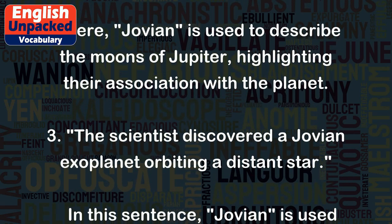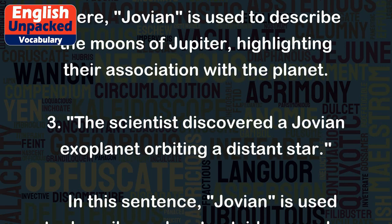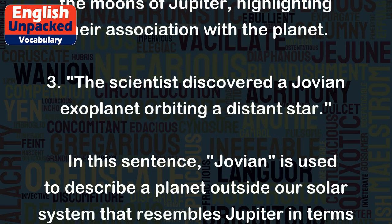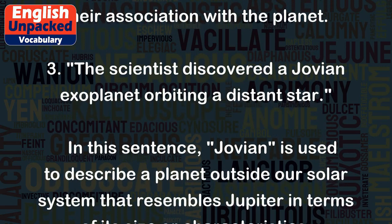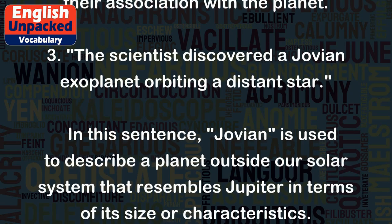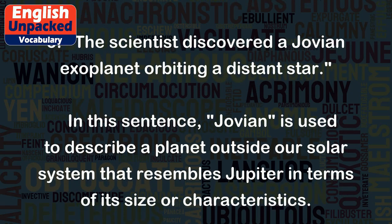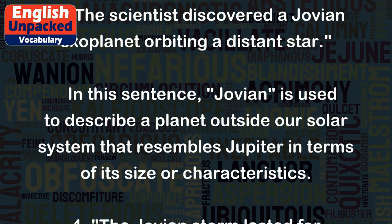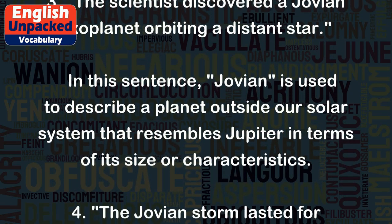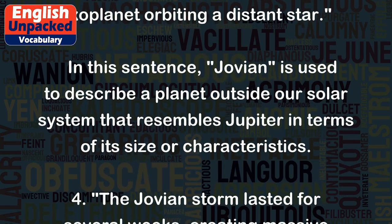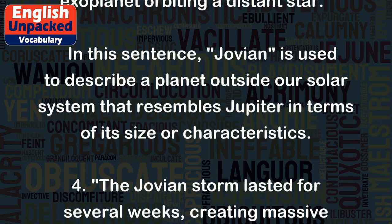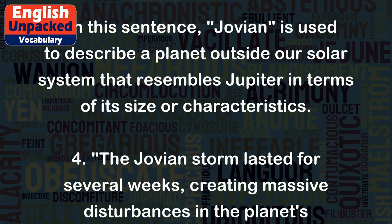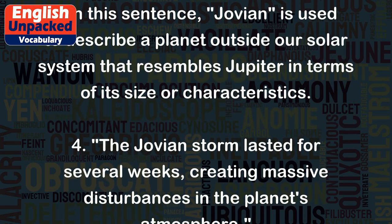3. The scientist discovered a Jovian exoplanet orbiting a distant star. In this sentence, Jovian is used to describe a planet outside our solar system that resembles Jupiter in terms of its size or characteristics.